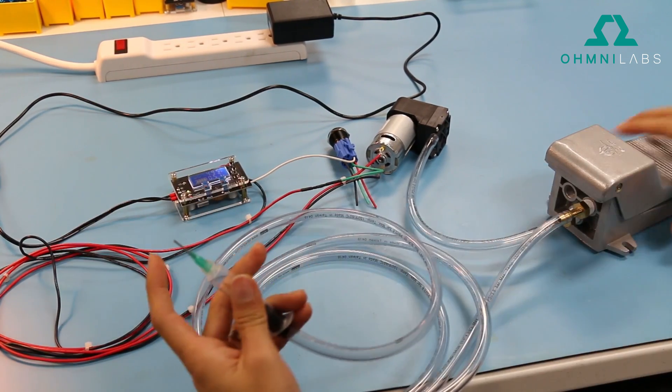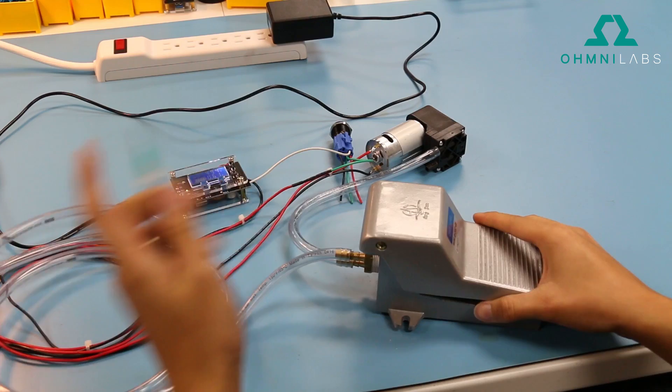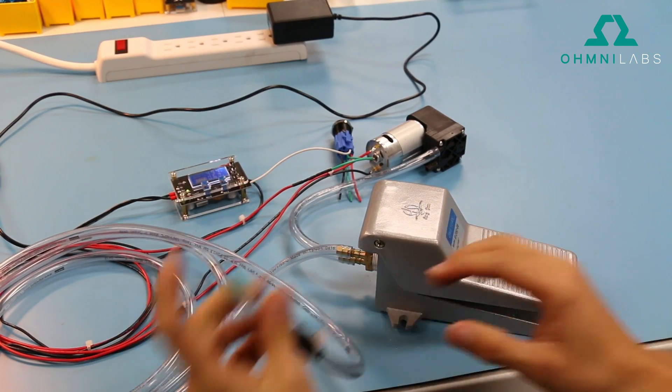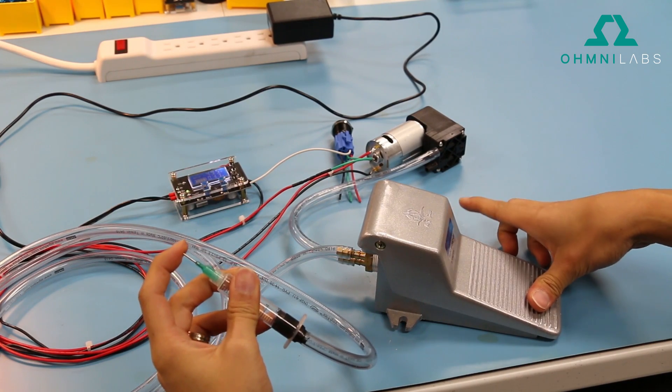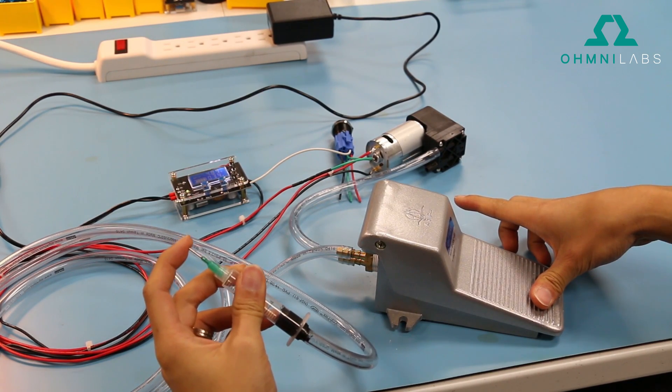And then separately, here's the foot pedal. So when I'm picking up a part, it picks up the part, put it where I want and that will release the pressure in the line so that the part basically falls off.